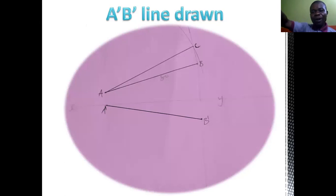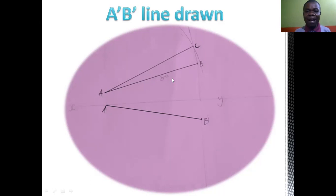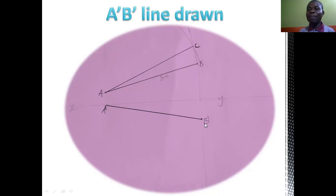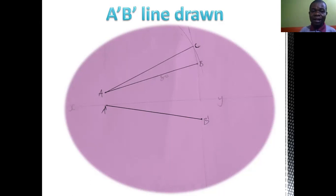I've gotten the plan. You see: in the first one, we were given the plan, we drew the true length, and we got the true angle. With this second one, we are given the elevation and the true length, and we got the plan. Whatever you have here is equal to whatever you have here — that is the true length, it is given. We constructed this; we got the distance from here to here, which enabled us to get line A prime B prime. You use the 60-30 degree set square with that 90-degree angle to project this line. Line A prime B prime is the true plan — the line that we are asked to draw.